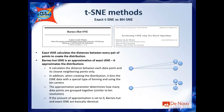With Barnes-Hut approximation, instead of calculating pairwise distances, you calculate the distance between an object of interest and the center of mass of a group of objects. So instead of calculating three individual distances, you calculate just one. This greatly speeds up the calculation. In FCS Express, you can tune a parameter called 'amount of approximation' ranging from 0 to 1, where 0 means no approximation (equivalent to exact tSNE), 1 is the highest approximation (fastest but most approximated), and the default is 0.5.